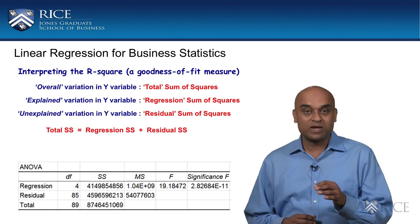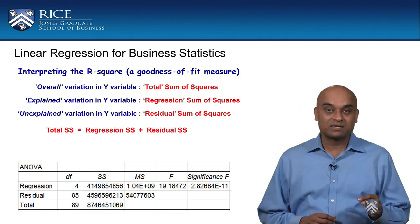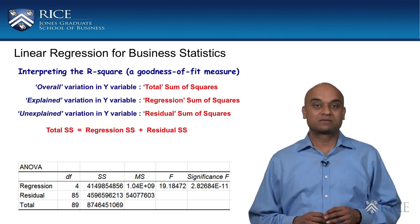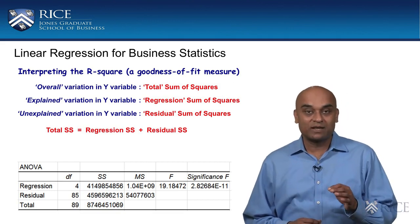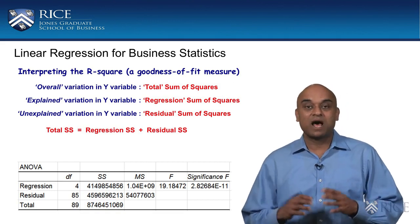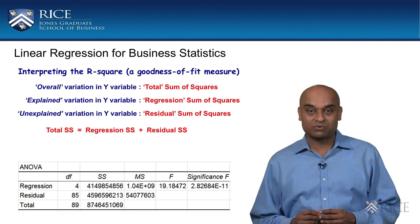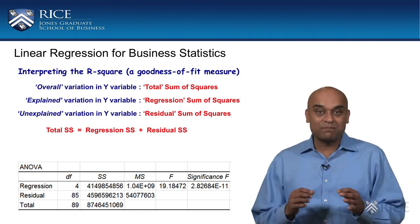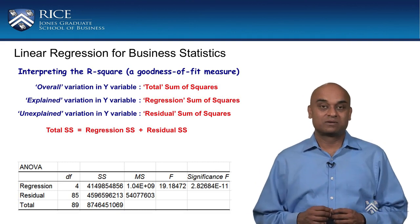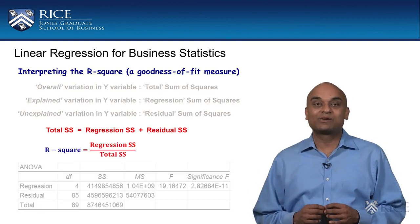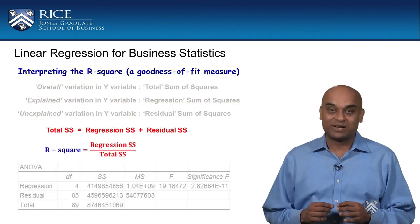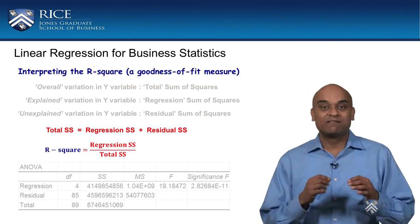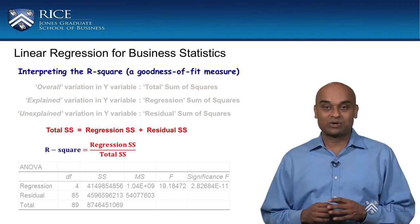Total sum of squares equals regression sum of squares plus residual sum of squares. A good fitting regression model will have a larger proportion of total sum of squares explained by the model compared to a poor fitting model. This notion is used to calculate R square, which is calculated as regression sum of squares divided by total sum of squares.